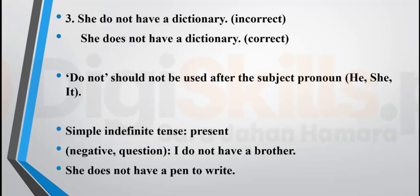'She do not have a dictionary' is incorrect. With third person singular — he, she, it — you use 'does,' not 'do.' In simple indefinite tense, you use 'do' or 'does' in present tense to make a negative: 'I do not have a brother.' For questions: 'Do I have a brother?' Use 'do' with first person singular/plural, second person, and third person plural 'they.' Use 'does' with third person singular he, she, it.